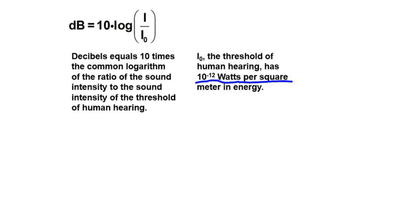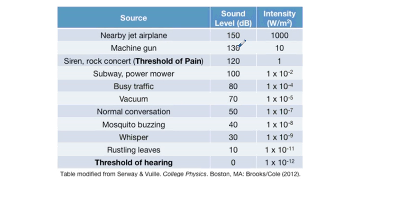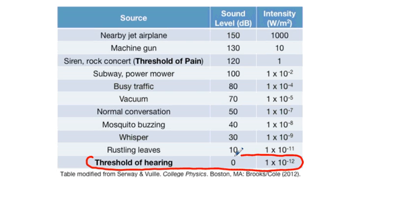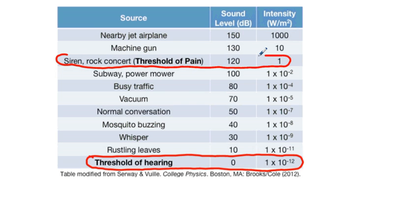Next, we'll look at a chart of common sounds and their relative intensities, both in watts per meter squared and in decibel level. Two key benchmarks: the threshold of human hearing is defined to be zero decibels and is 1 times 10 to the negative 12 watts per meter squared. The threshold of pain is 120 decibels, which is 1 watt per meter squared.